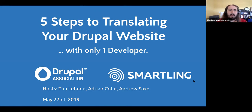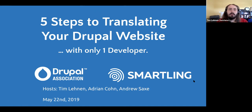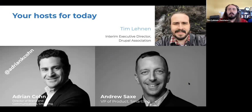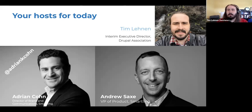We'll also be doing some poll questions to get an idea of where you are in your translation journey. What we're really talking about today is a very real situation: if you need to do a multilingual project, your product team probably wants your developers working on features instead. Smartling's VP of Product, Andrew Sachs, and Director of Brand Strategy and Communications, Adrian Cohn, will talk about how to minimize development time needed for robust multilingual translation, covering both Drupal 8 and Drupal 7.